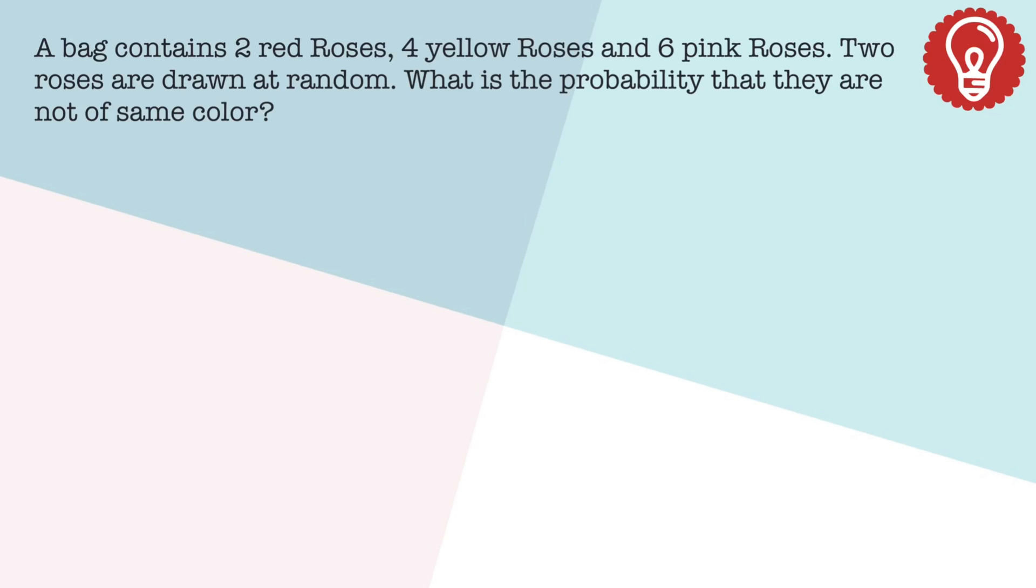And even in this question, two roses are drawn at once. But this time, we don't want them to be of the same color. And the best way to solve not of the same color is to take the total probability and subtract the opposite of the condition given in the question. So not of the same color, we will take same color and subtract that from the total probability.